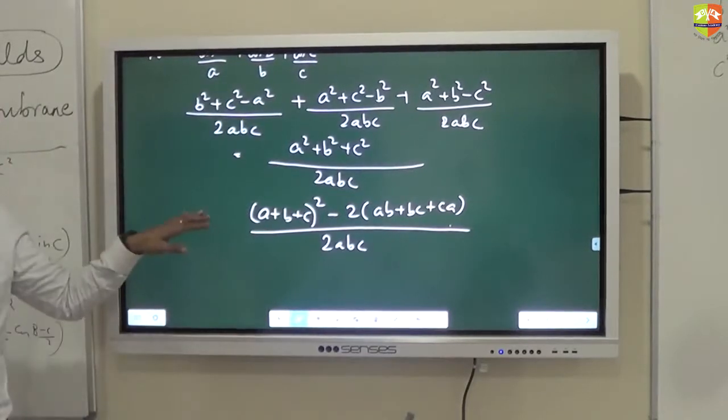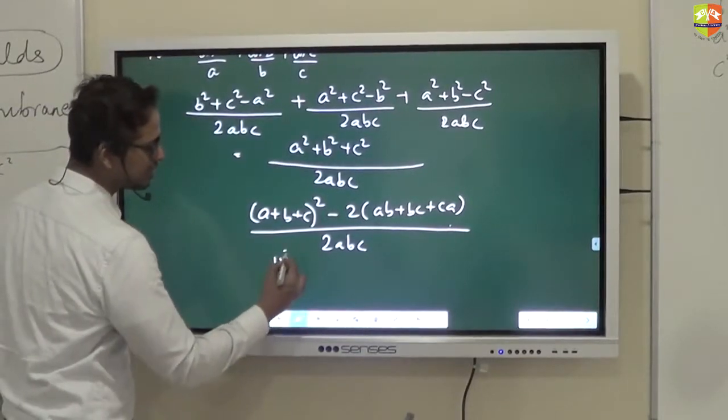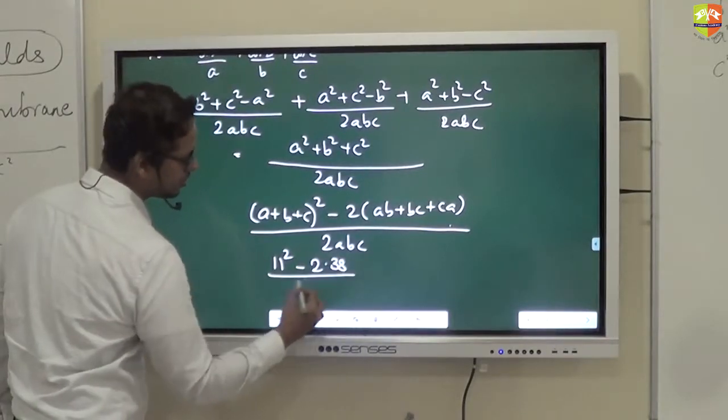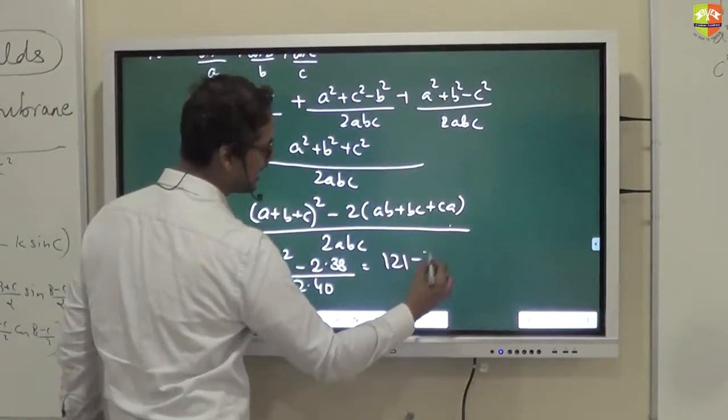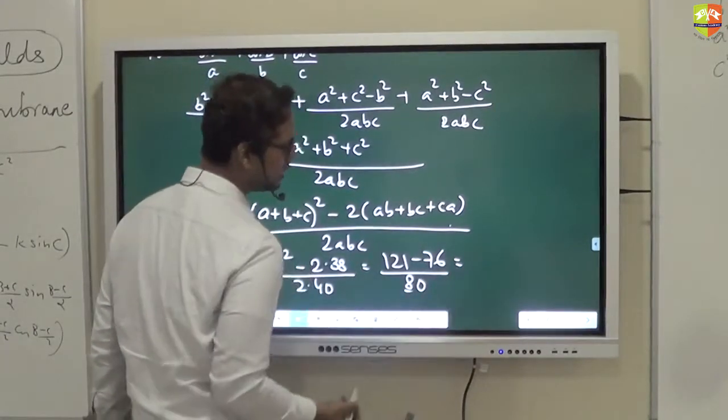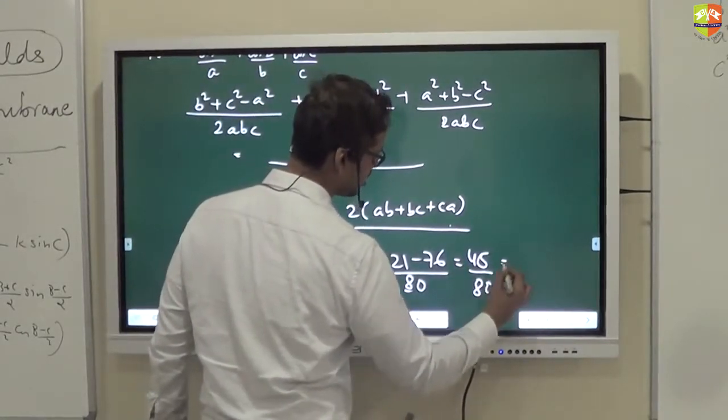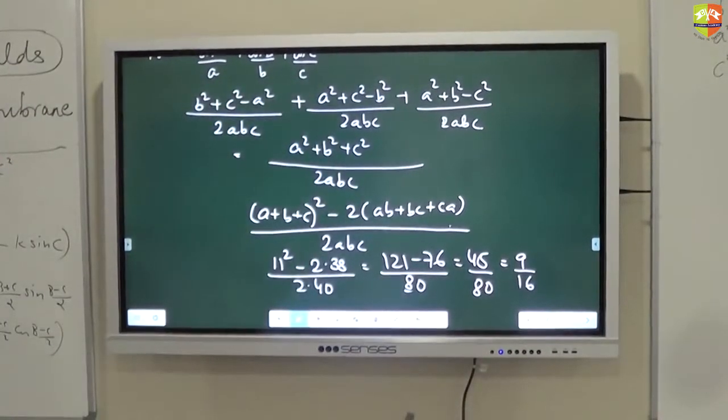Now, if I take 2abc as the LCM, won't I get a² + b² + c²? And wouldn't this be (a + b + c)² - 2(ab + bc + ca)? Now this has everything which I already found out. A + b + c we found was 11. This is 2 × 38 / 2 × 40. So answer is (121 - 76) / 80, which is 45 by 80, which simplifies to 9/16.